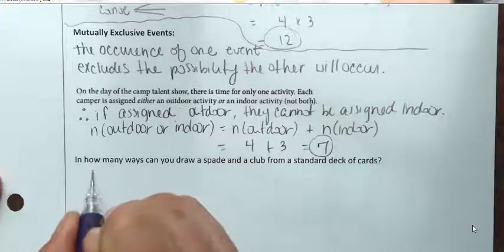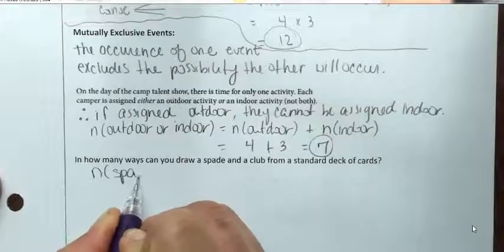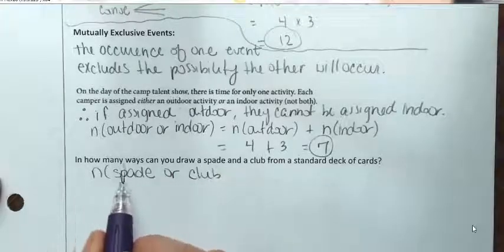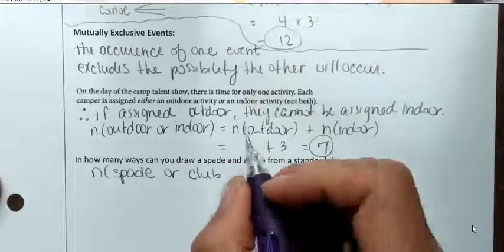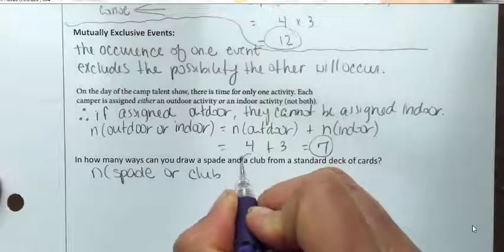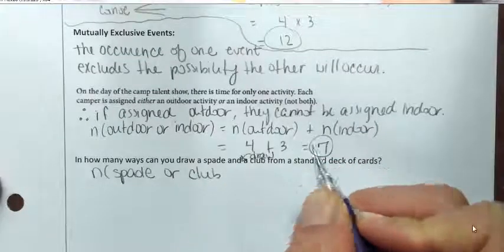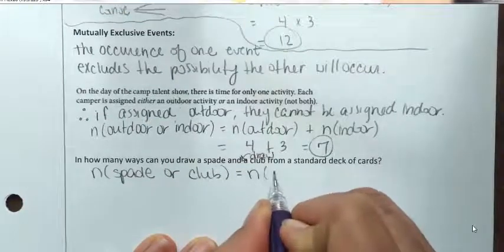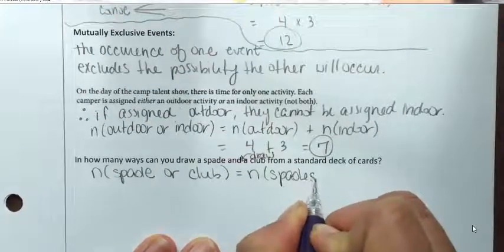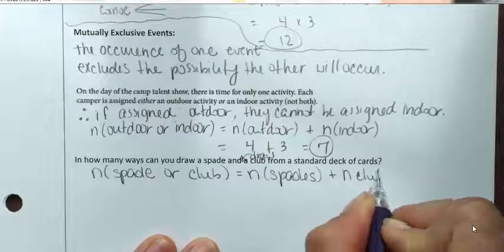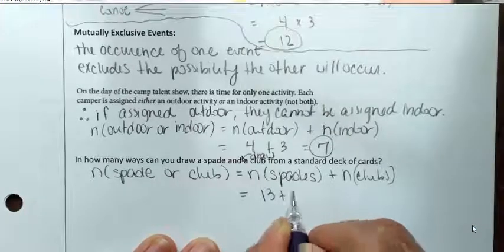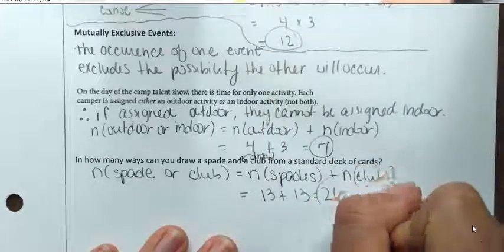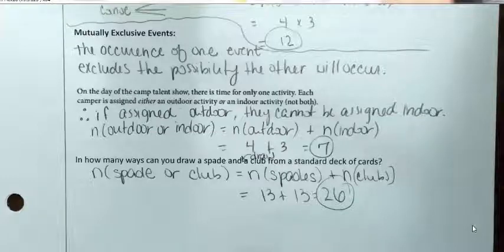These are mutually exclusive events. We're trying to find the number of outcomes of drawing a spade or a club. The number of spades was 13, plus the number of clubs, which was another 13. So this would be 13 plus 13 equals 26 total outcomes. Again, mutually exclusive — one does not affect the other.